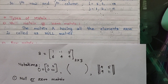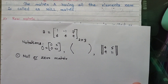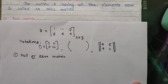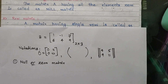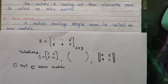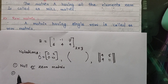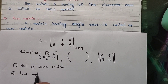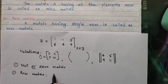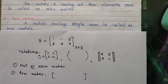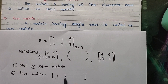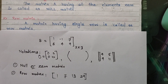Let's move on to the next type: the row matrix. A matrix which has only a single row and any number of columns is called a row matrix. In a row matrix, there is always a single row and there is no restriction on the number of columns. For example: 1, 7, 13, 29 — this is a row matrix.